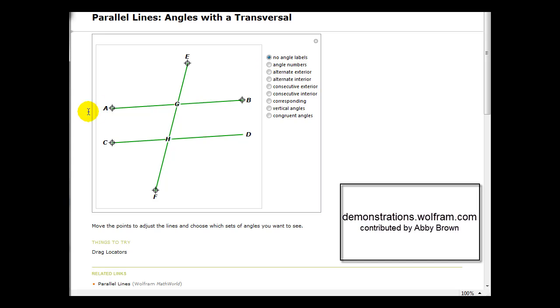So here we have two parallel lines cut by what's called a transversal. We can see here in red, those are vertical angles, and so are the ones in blue, as well as the ones down here in orange and purple. And if we move the parallel lines, notice how the vertical angles remain equal in measure. And the same thing if we move the transversal.